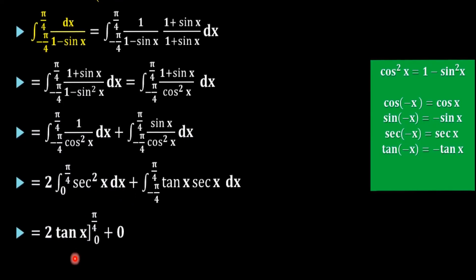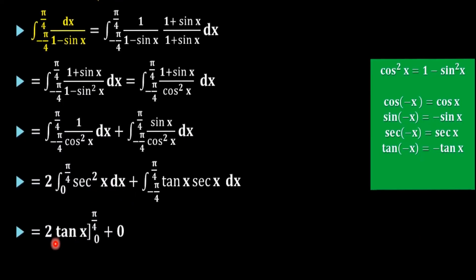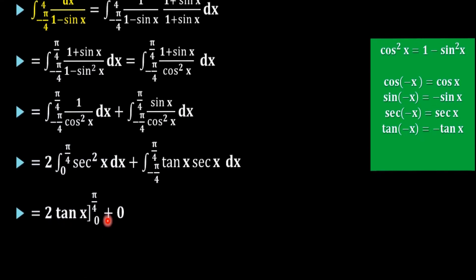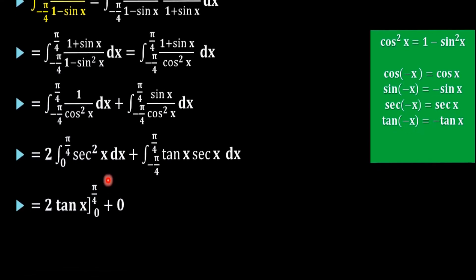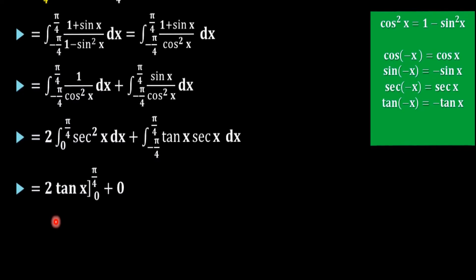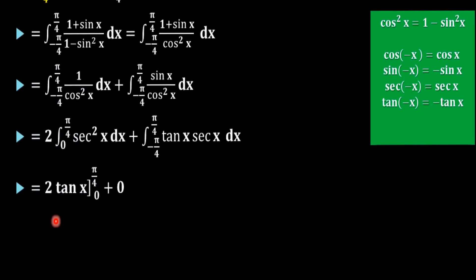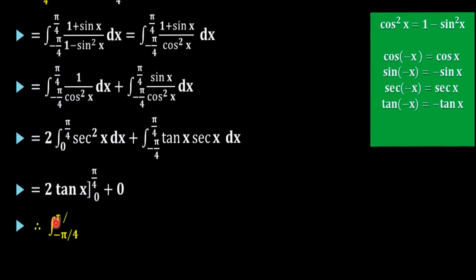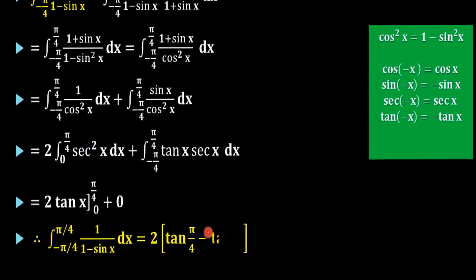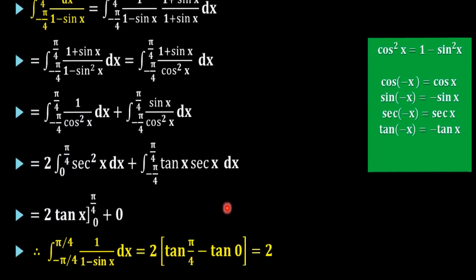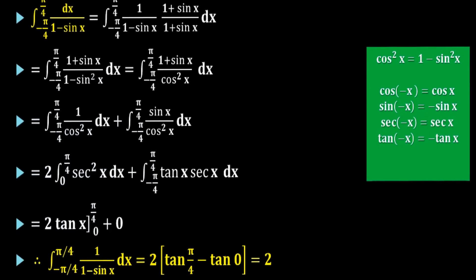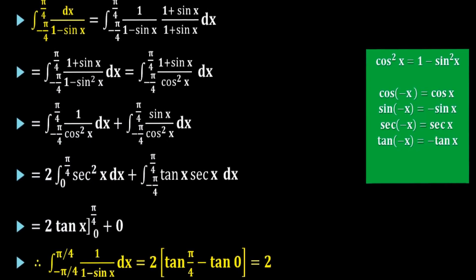So we are left with 2 times the integral from 0 to pi by 4 of sec squared x dx, which equals 2 times tan x evaluated from 0 to pi by 4. That gives 2 times tan(pi by 4) minus tan(0), which is 2 times 1 minus 0, equal to 2. So 2 is our required result.